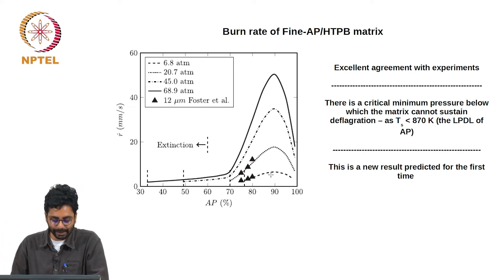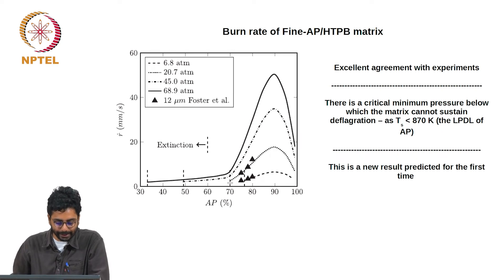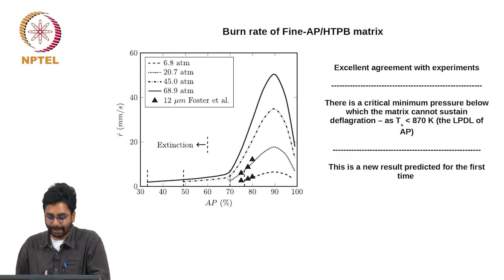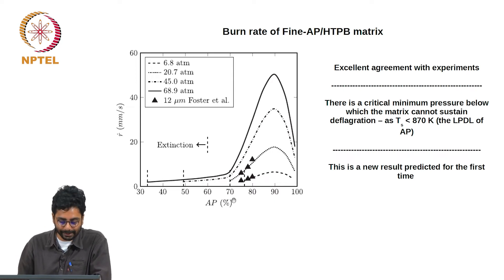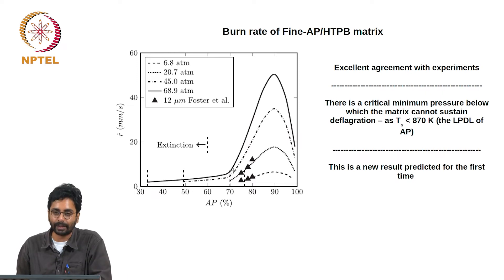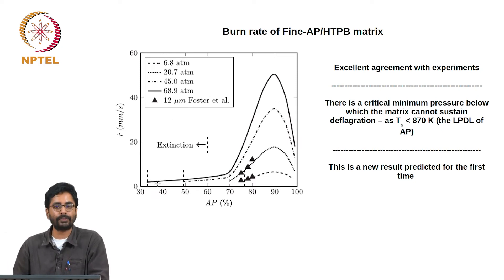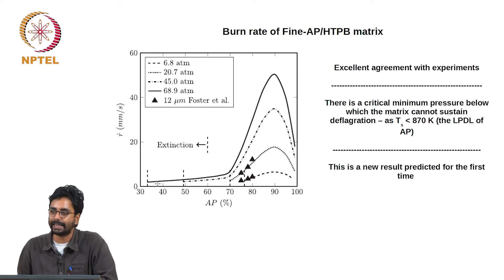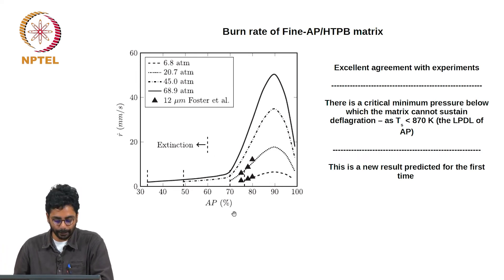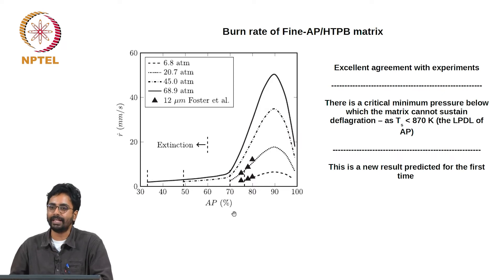Another prediction the theory makes: it will start burning at 20 atmospheres or 20.7 atmospheres as indicated. Similarly, extinction limits have been shown at different pressures — at 45 atmospheres compositions containing even 50 percent AP can burn; at 68.9 atmospheres compositions containing even 30 percent AP can burn. There are statements in the literature that compositions with 70-75 percent AP would not burn at pressures lower than 20 atmospheres, and you will not find any data for these compositions at lower pressures or AP loading.